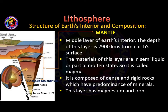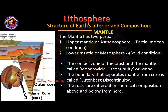The next layer is the mantle, which is the middle layer of the Earth. It has a depth of 2900 km from the Earth's surface. The material of this layer is in a semi-liquid or partial molten state. It is composed of dense and rigid rocks with a predominance of minerals, and this layer contains magnesium and iron.